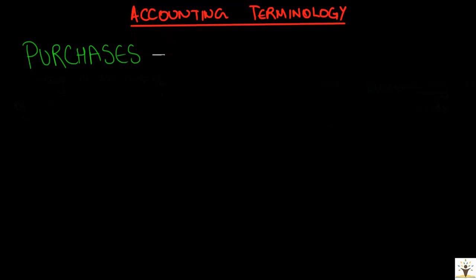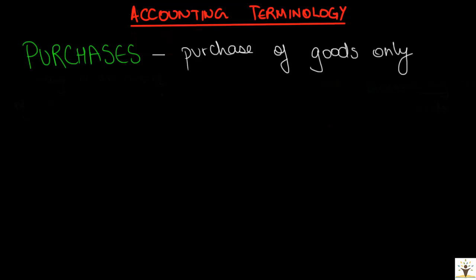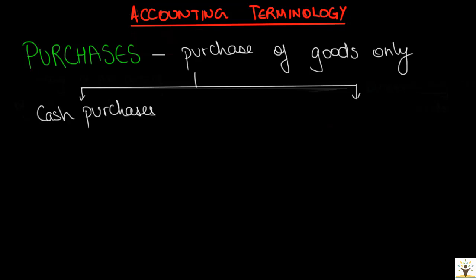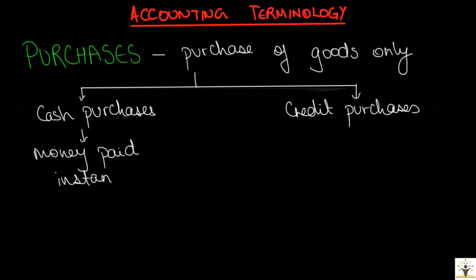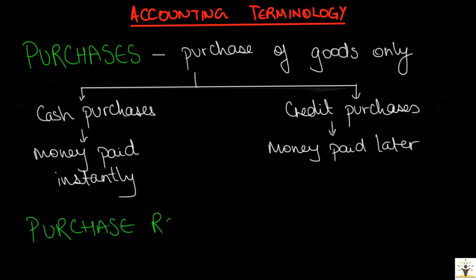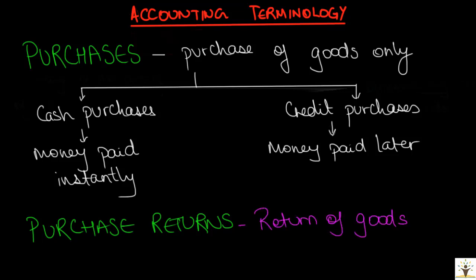On similar lines, we have purchases. For the purpose of accounting, purchases means purchase of goods only — the products that the business normally deals in. Only purchase of those products will be termed as purchases; anything else purchased is not purchases. Similar to sales, purchases will also be classified into cash purchases and credit purchases. Under cash purchases, the amount involved is paid immediately by the business. In credit purchases, it is agreed that the business will pay the supplier on a later date. When goods purchased from a supplier are returned back to the supplier for any reason, it is termed as purchase returns.